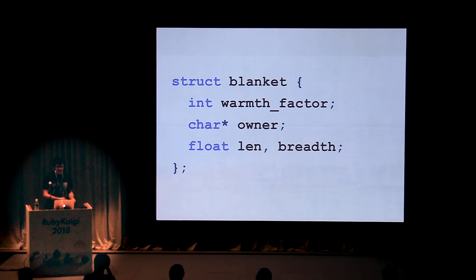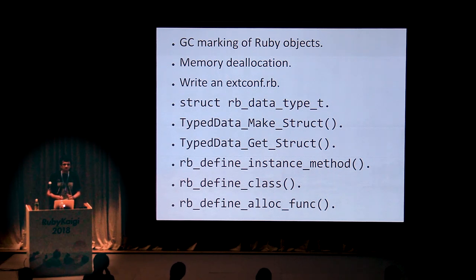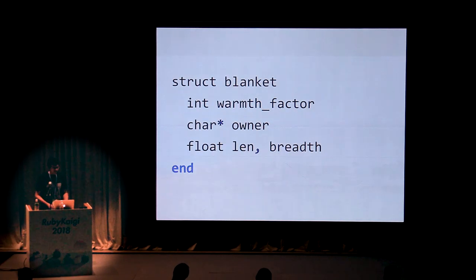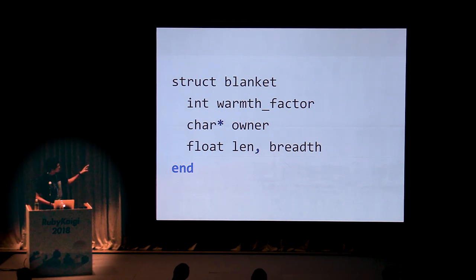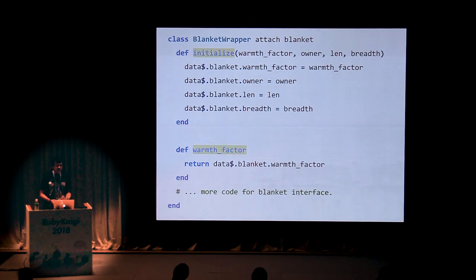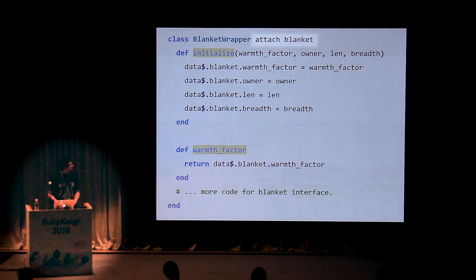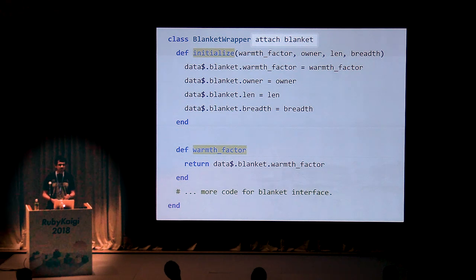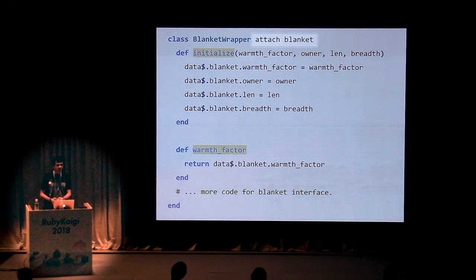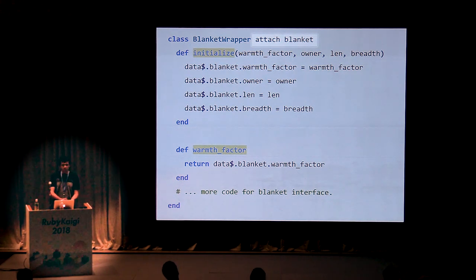You read the documentation on how to wrap a struct using Ruby and see hundreds of methods you need to use for such a simple thing. So then you use Rubex. You simply write a Rubex struct called blanket, implementing the exact same C data types as seen earlier. Then you write a class called BlanketWrapper. What's different about this class is the attach keyword at the top. The attach keyword tells the Rubex compiler that the class BlanketWrapper is responsible for all allocation and deallocation of the blanket struct. Therefore, the GC interfacing of the struct is taken care of by Rubex and written by Rubex instead of having to be written by you.